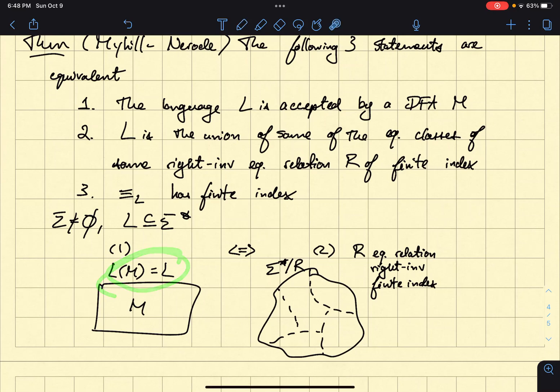And then two says that this language L here, right, the same language L here, is a union of some of these equivalence classes. So maybe L is this equivalence class union this equivalence class. Okay.